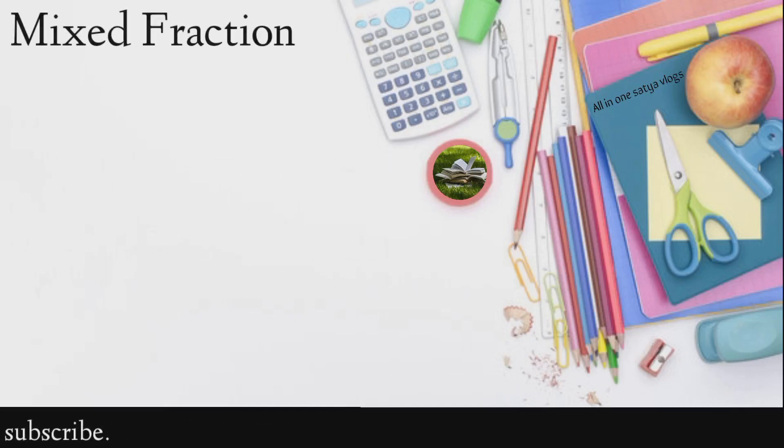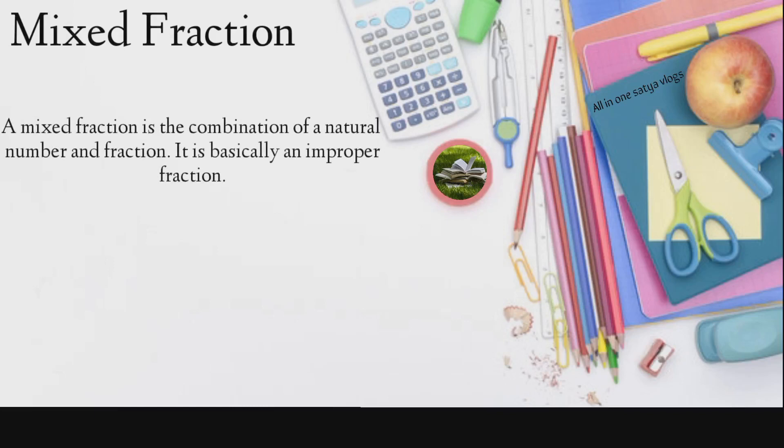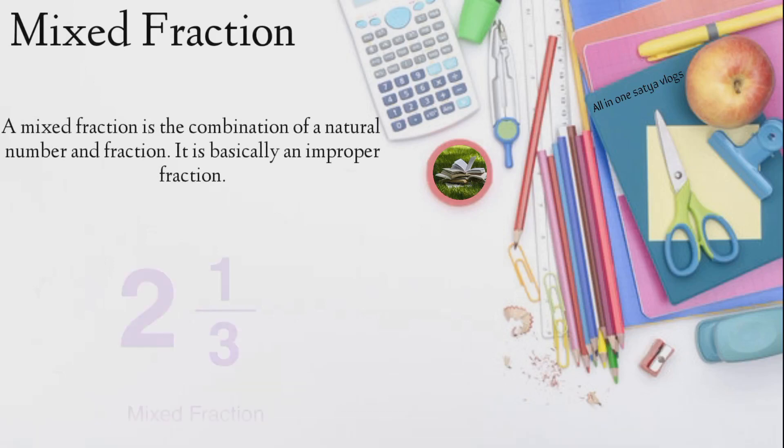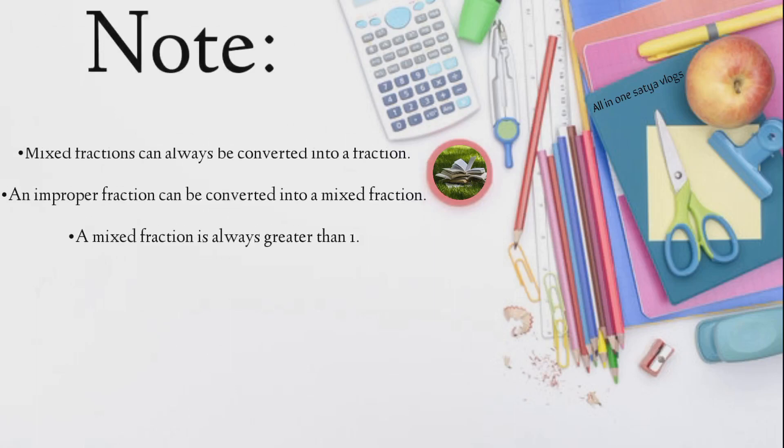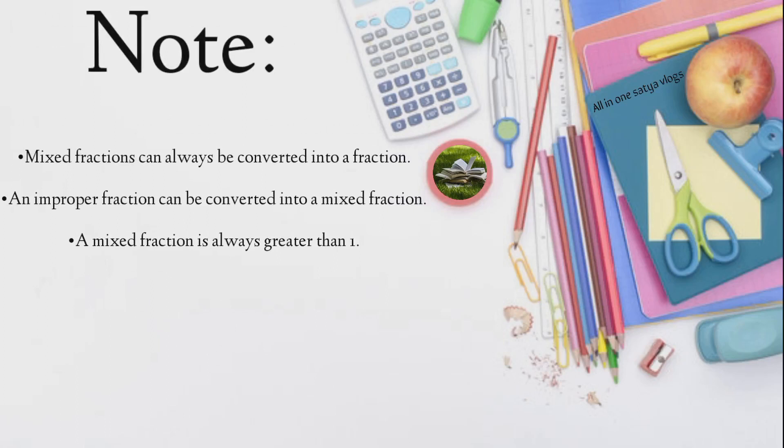Mixed fraction. A mixed fraction is the combination of a natural number and fraction. It is basically an improper fraction. An improper fraction can be converted into a mixed fraction. A mixed fraction is always greater than one.